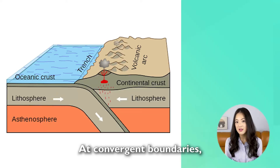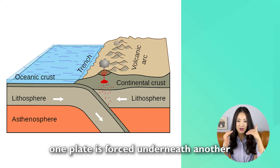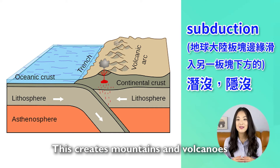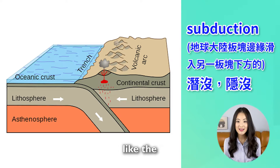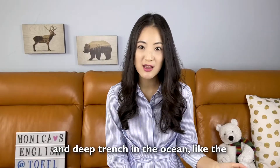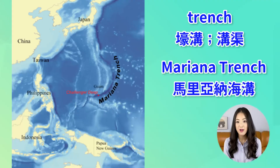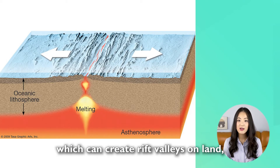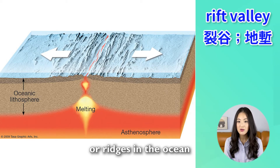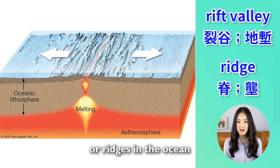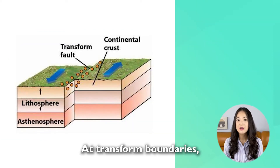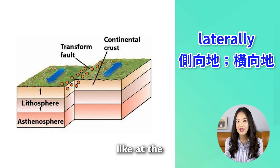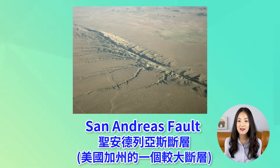At convergent boundaries, one plate is forced underneath another in a process called subduction. This creates mountains and volcanoes like the Himalayas, and deep trenches in the ocean like the Mariana Trench. At divergent boundaries, plates move apart, which can create rift valleys on land or ridges in the ocean. At transform boundaries, plates rub against each other laterally, which can create earthquakes like at the San Andreas Fault.